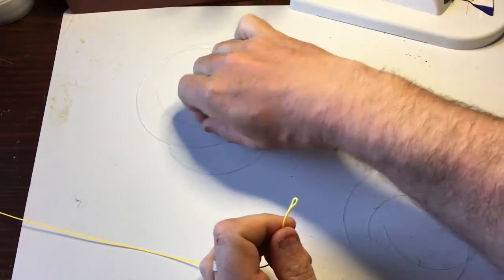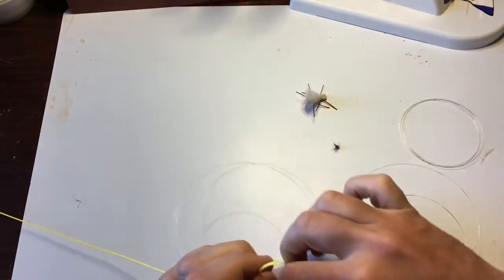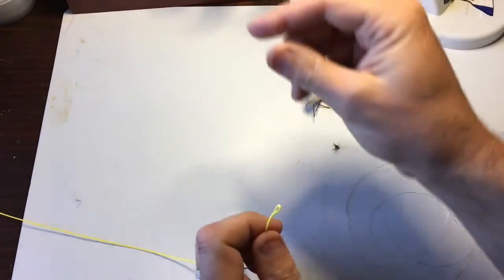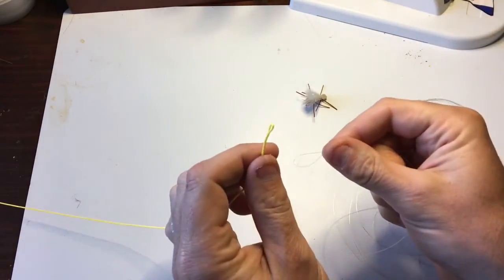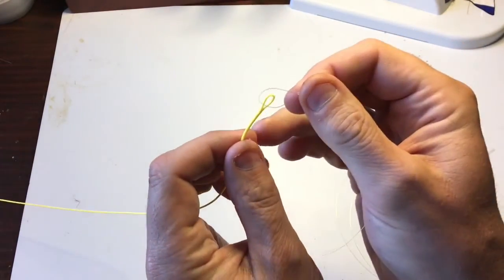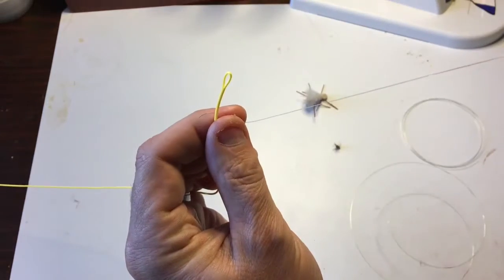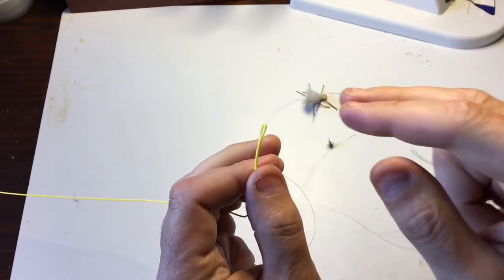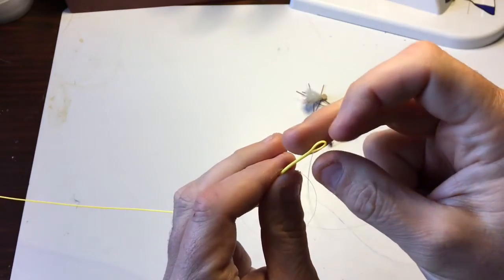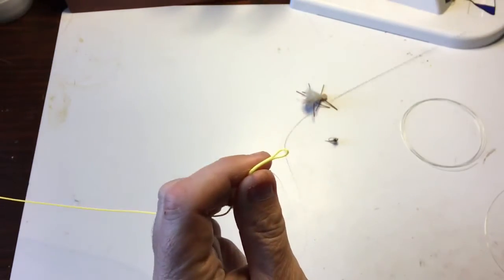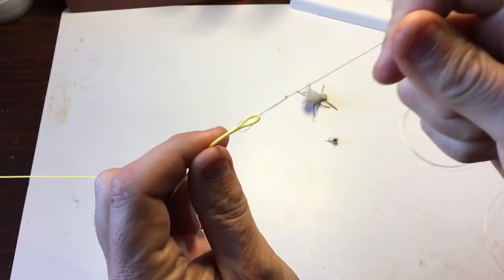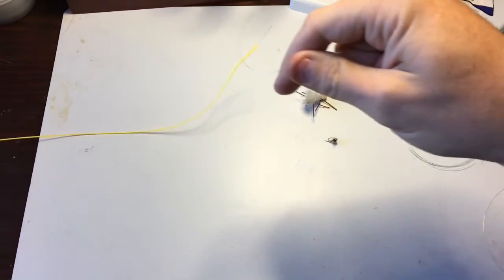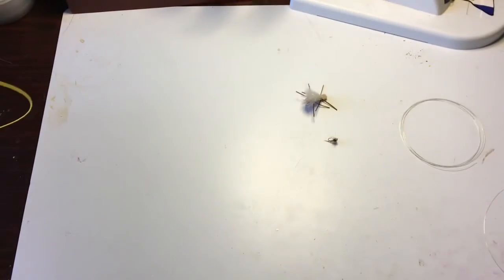Typically on dry dropper rigs I use a nine-foot leader. This is a cut down leader here just for the purposes of demonstration. But we'll start off with our loop-to-loop connection. We'll put the loop of the leader over the fly line and then come back through with the end of the leader, which creates the loop-to-loop connection right there.